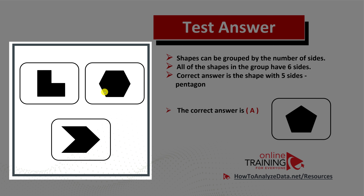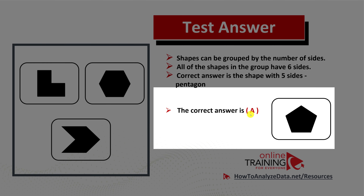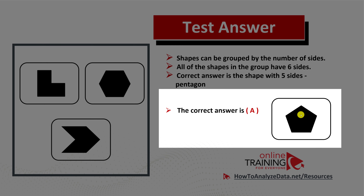Same with the hexagon — six sides. And same with the arrow — six sides. So the correct answer here is choice A, the pentagon, which only has five sides. Hopefully you've nailed this question and now know how to answer similar questions and problems on the test.